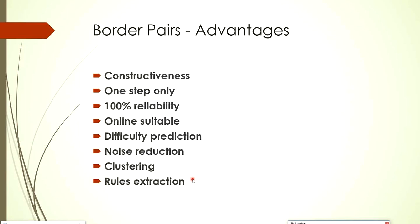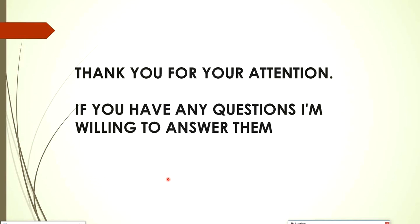The last advantage is rules extraction. The first layer performs analog-to-digital conversion and finds rules. From the second layer onward, we have only logical functions in each subsequent layer. Every neuron in the first layer finds one rule. Thank you for your attention — if you have any questions, I'm willing to answer them.